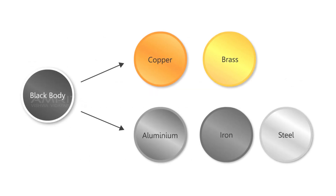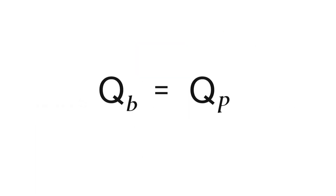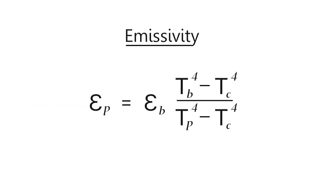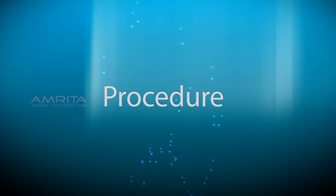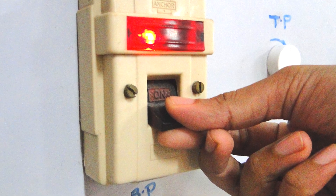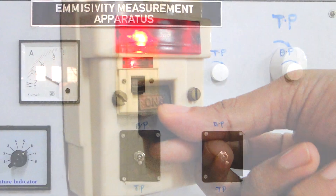Since the input power to the two test plates is the same and conduction heat losses are also the same, Q_b is equal to Q_p. Therefore, emissivity ε_p = ε_b · (T_b⁴ − T_c⁴) / (T_p⁴ − T_c⁴).